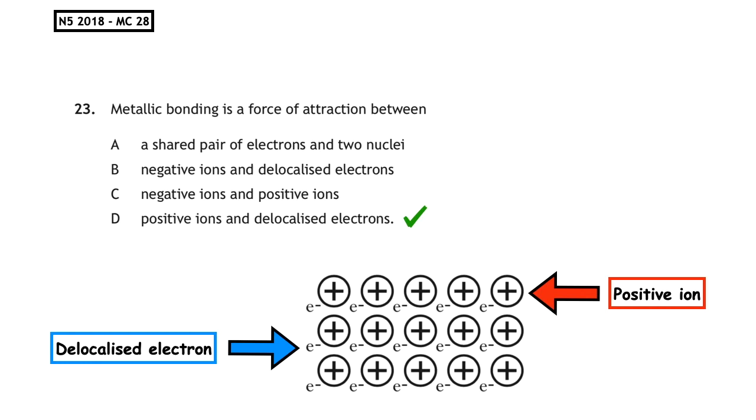What we can see is in this diagram, we have the positive ion and we have the delocalized electrons which are able to flow through the lattice structure.